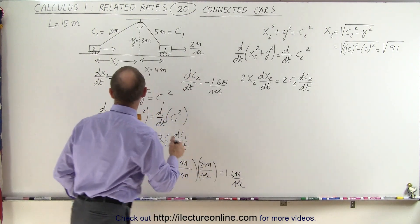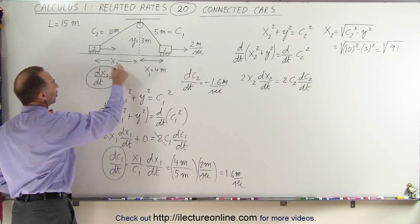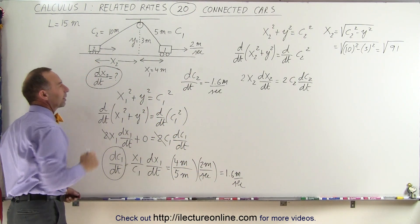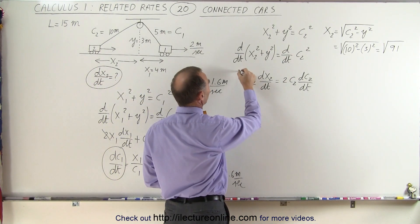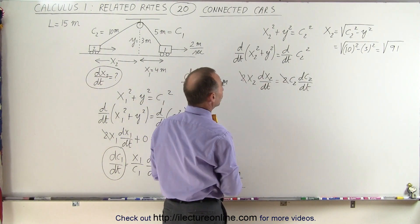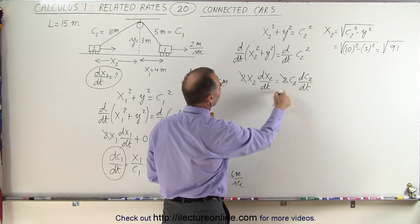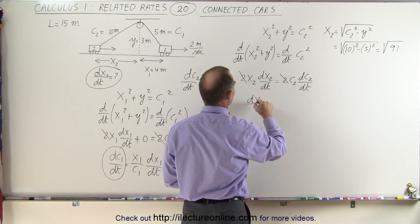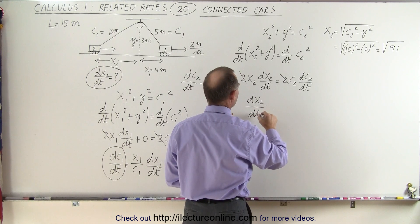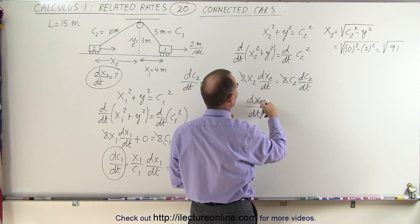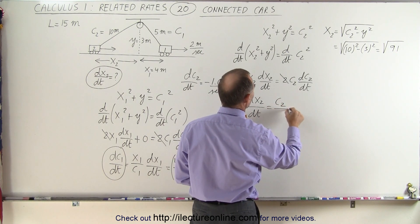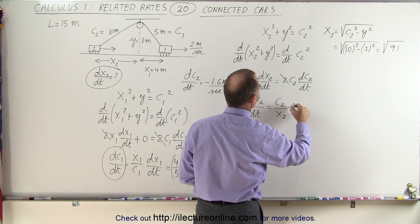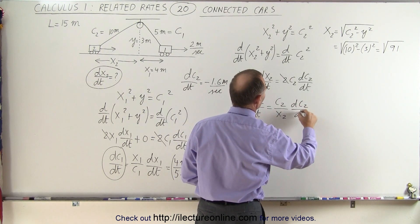And remember we're looking for the rate of change of the second car with respect to time, which means we're looking for this right here. First of all, I can get rid of the 2s. I can divide both sides by x2. So we get dx2 dt, or the rate of change of x2 with respect to time, is c2 divided by x2 times dc2 dt.